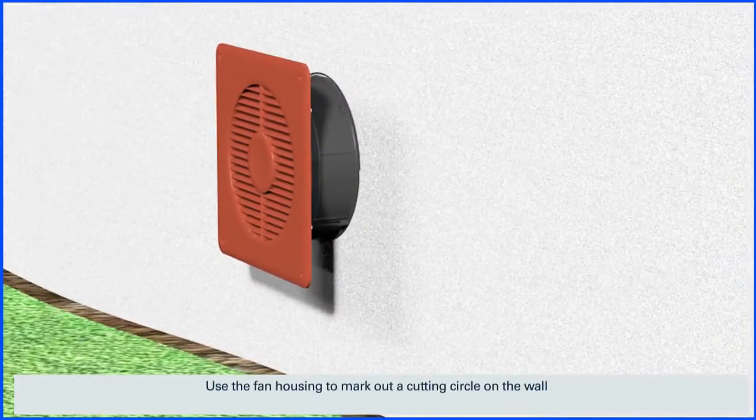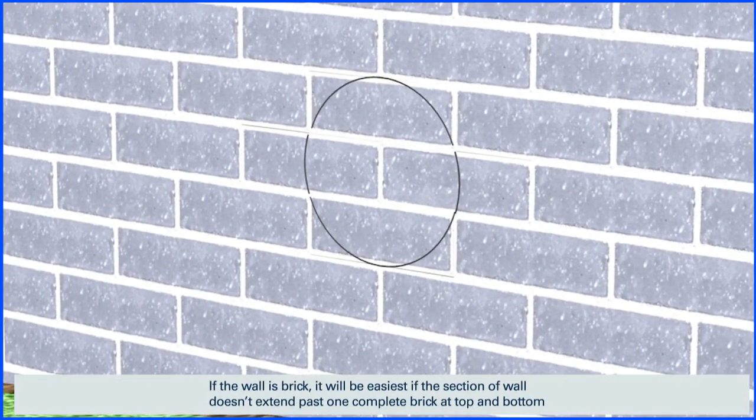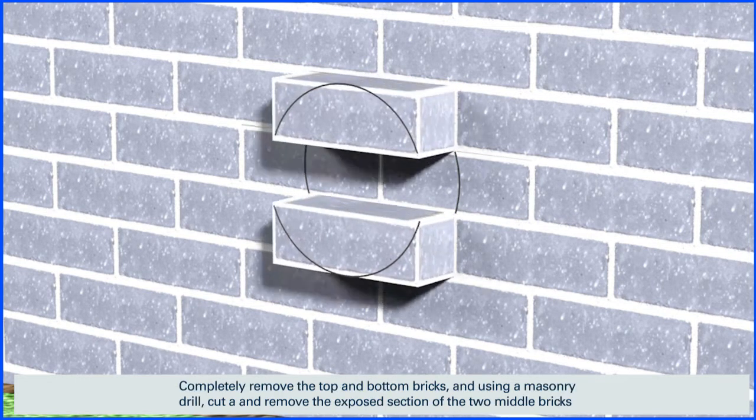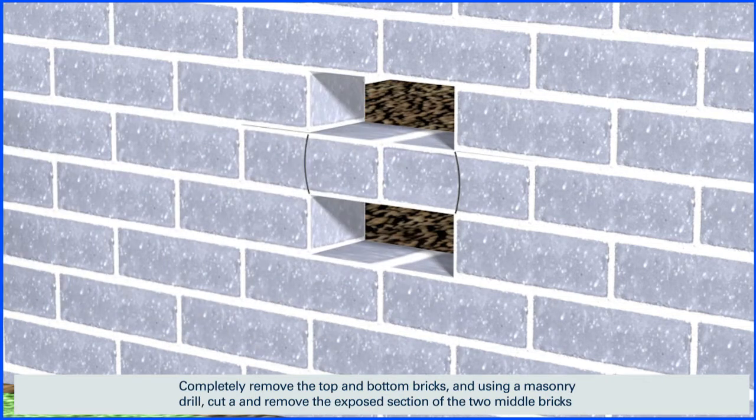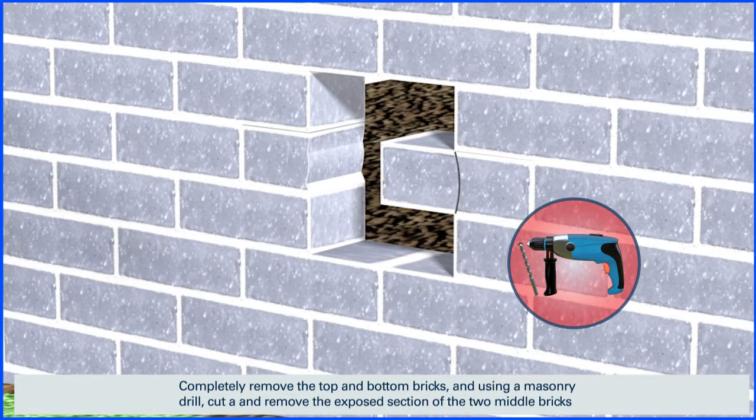Use the fan housing to mark out a cutting circle on the wall. If the wall is brick, it will be easiest if the section of wall doesn't extend past one complete brick at top and bottom. Completely remove the top and bottom bricks and using a masonry drill cut and remove the exposed section of the two middle bricks.